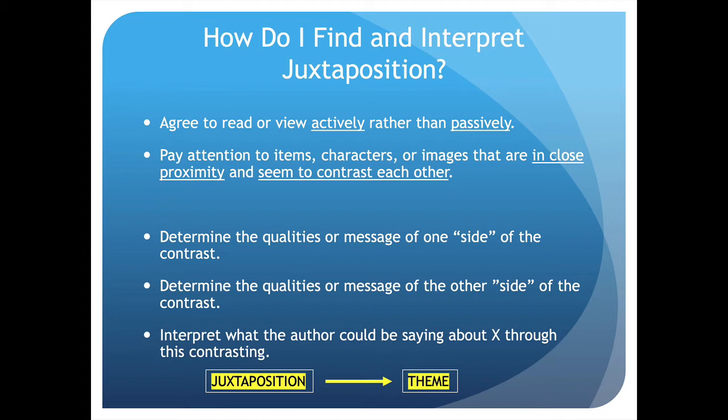On the next slide, we'll show you a chart to help us interpret that juxtaposition. We want to determine the qualities or message of one side of the image, words, or character pair being juxtaposed, and then determine the qualities or message of the other side. Then we have to make that interpretive jump — ask ourselves what each side represents and what the author is trying to teach us by putting them next to each other. If we can figure out what the juxtaposition means, we can begin figuring out what we are supposed to learn from that text.